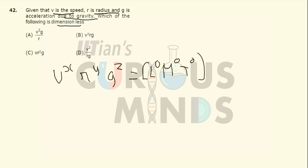So now V raise to X will be equal to L1 T raise to minus 1 raise to X. R is the radius so it will be equal to L1 raise to Y. And acceleration due to gravity is equal to L1 T raise to minus 2 raise to Z, will be equal to L0, M0, T0.